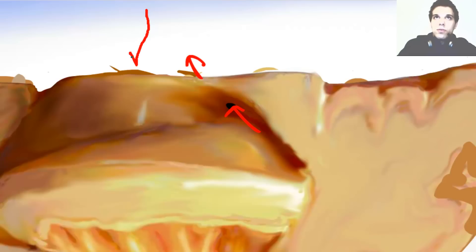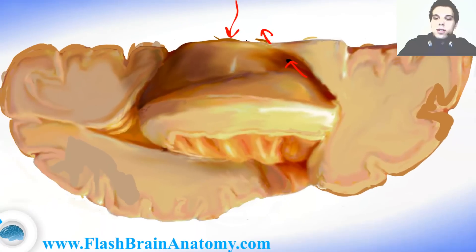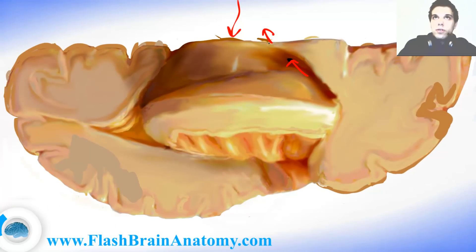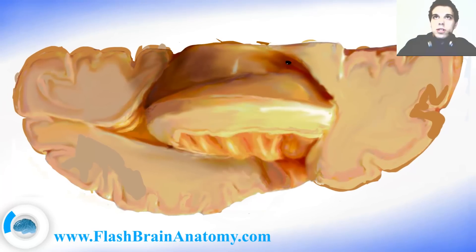If we go inside that foramen we would exit on the medial side of this model. I will illustrate this model from the medial point of view in the video about the third ventricle, because that is the third ventricle over there. When you enter the foramen you actually enter the third ventricle and exit the lateral ventricle. The foramen of Monroe represents the border between the cellamedia and the anterior horn.